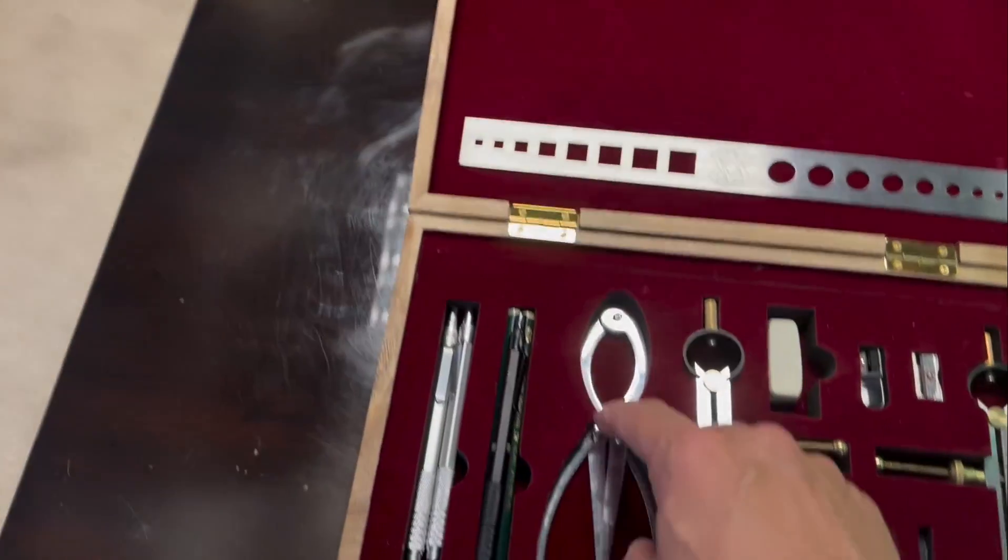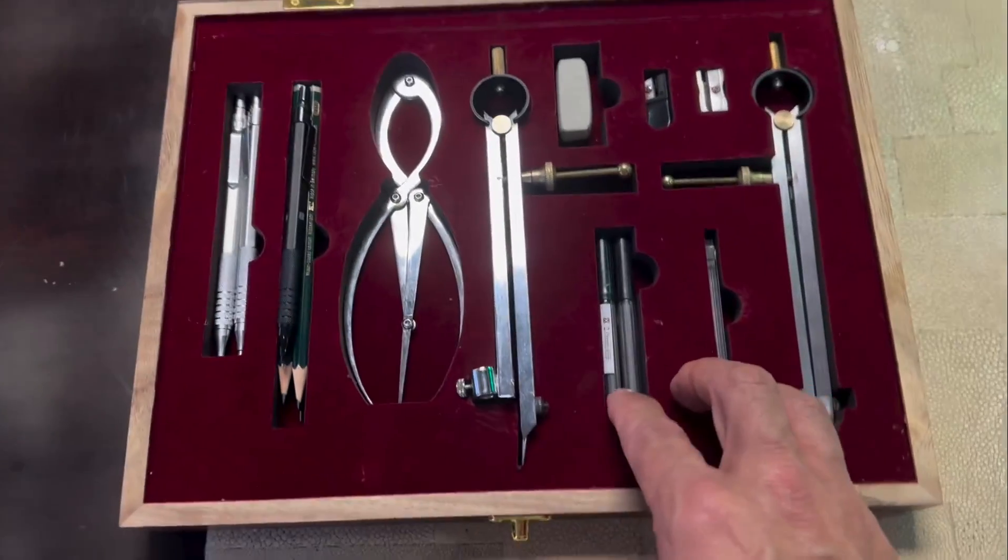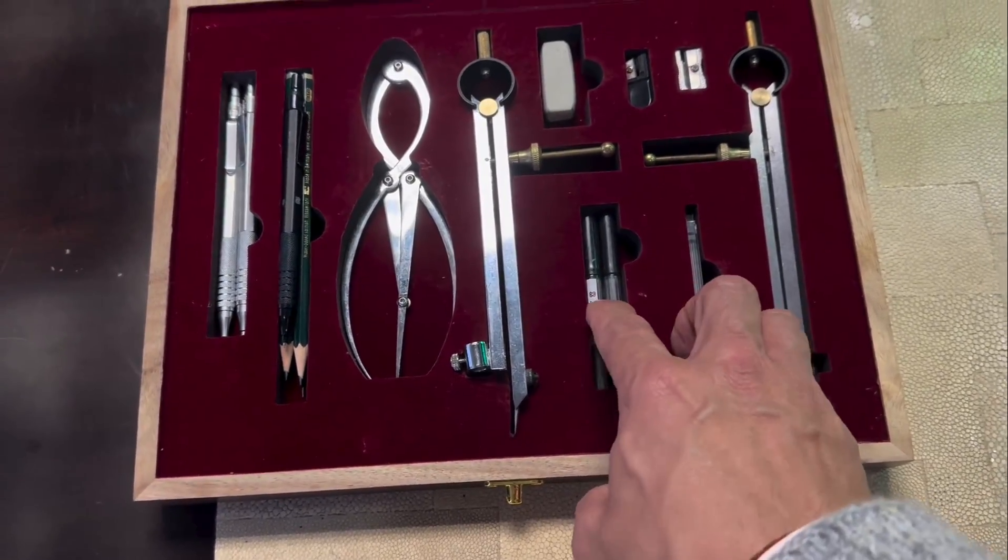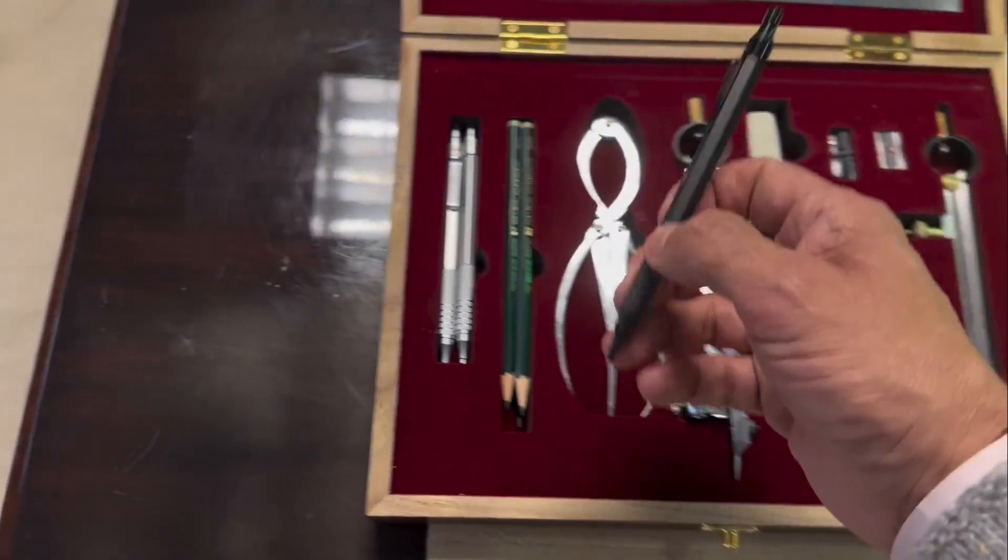Also has this phi caliper set, so this is for the golden ratio to measure things. It's also got these different leads that go into the different pencil types. And this is one of the pencils right here.